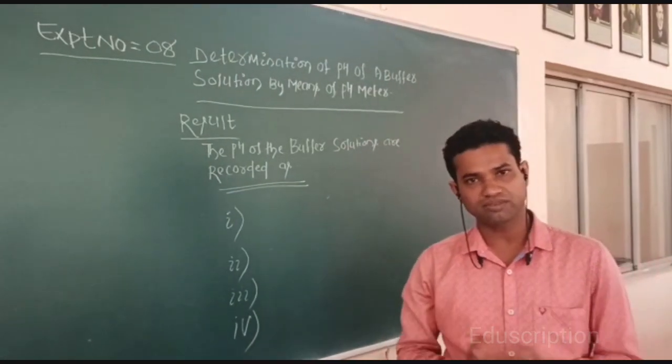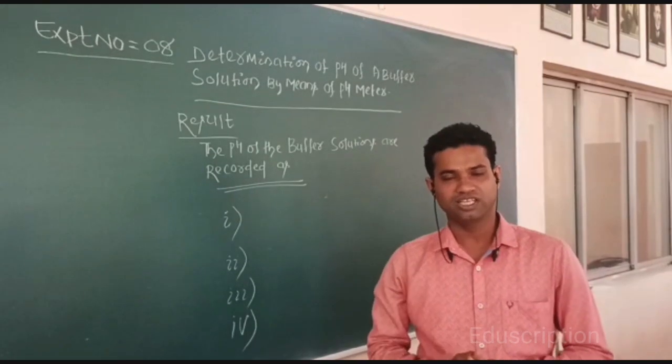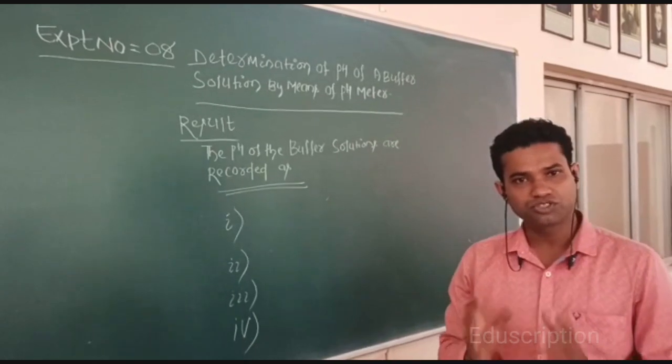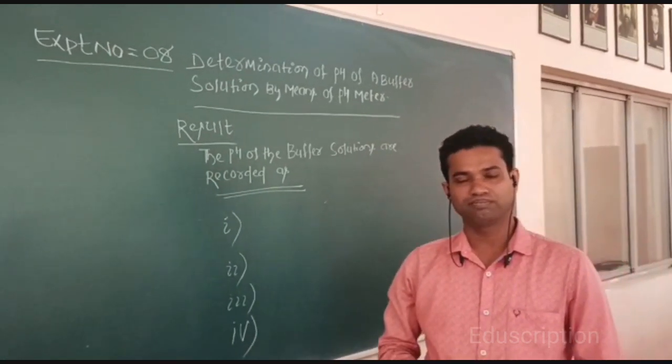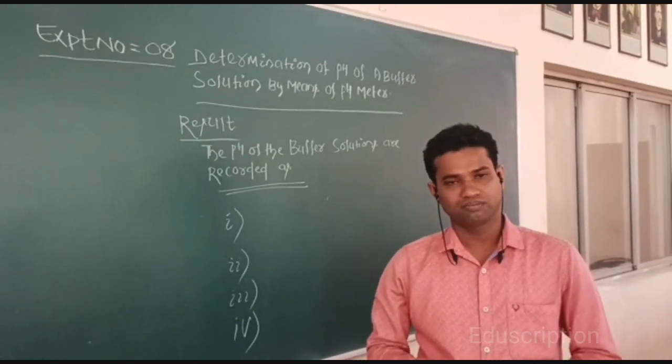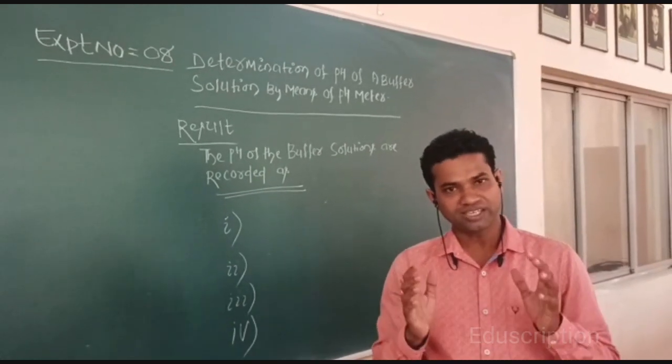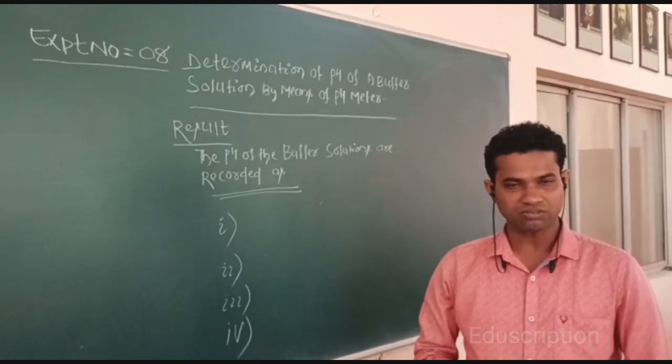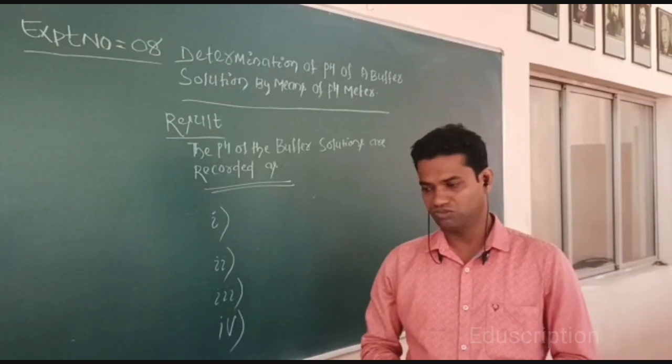Actually, there are two methods to detect the pH value. One is colorimetric method, another one is electronic method. In colorimetric method we observe the pH value by matching the color. But in electronic method we can detect the exact pH value of an unknown solution.